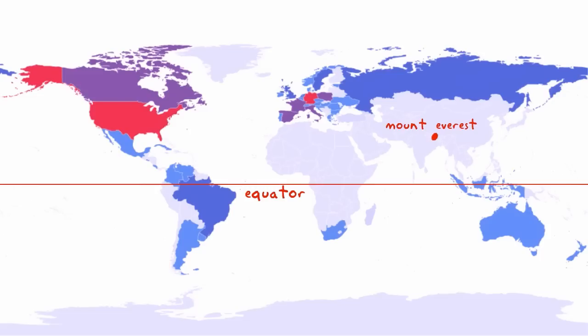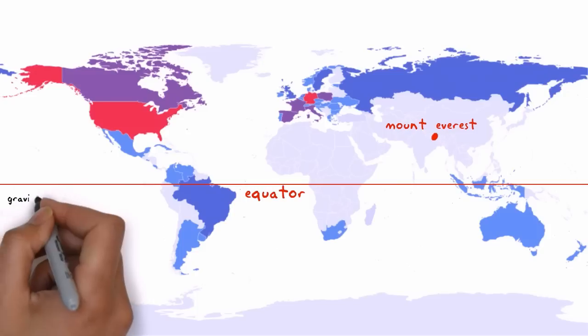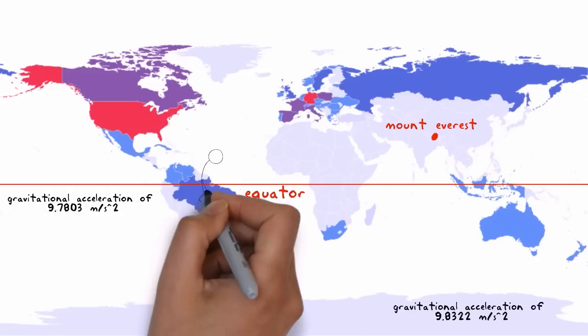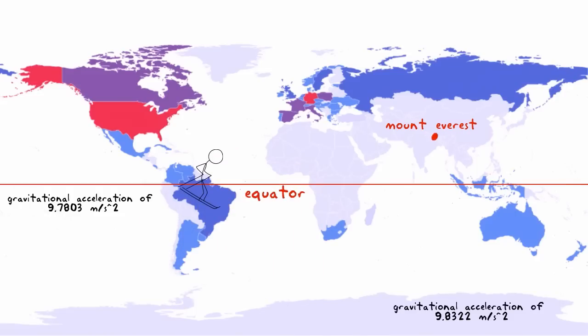Usual models predict a minimum gravitational acceleration of 9.7803 meters per second squared at the equator and 9.8322 meters per second squared at the poles. That means an object at the equator weighs half a percent less than at the poles.